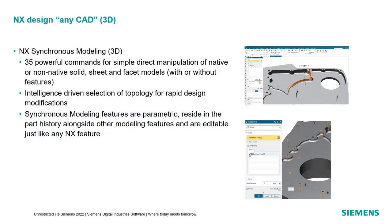Let's start by looking at imported 3D data. This can come from any CAD system and in a variety of formats — it could be a STEP file, a JT file with embedded B-rep, or even the result of a topology optimization, which would be a facet body. It doesn't really make any difference to NX — it can work with all these data types effectively.